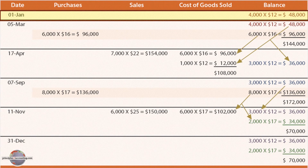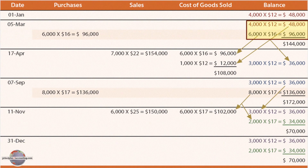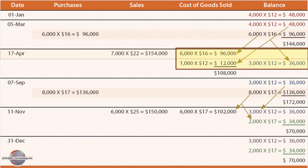We start on January 1 with 4,000 units at $12 a unit, for a total cost of goods available of $48,000. On March 5, we buy 6,000 units at $16, so our inventory pool consists of 4,000 units at $12 and 6,000 units at $16. On a LIFO basis, on April 17th, we have a sale of 7,000 units. We assign $108,000 of cost to those units — that consists of the last layer purchased, 6,000 units at $16, plus 1,000 units from the previous layer at $12 per unit.